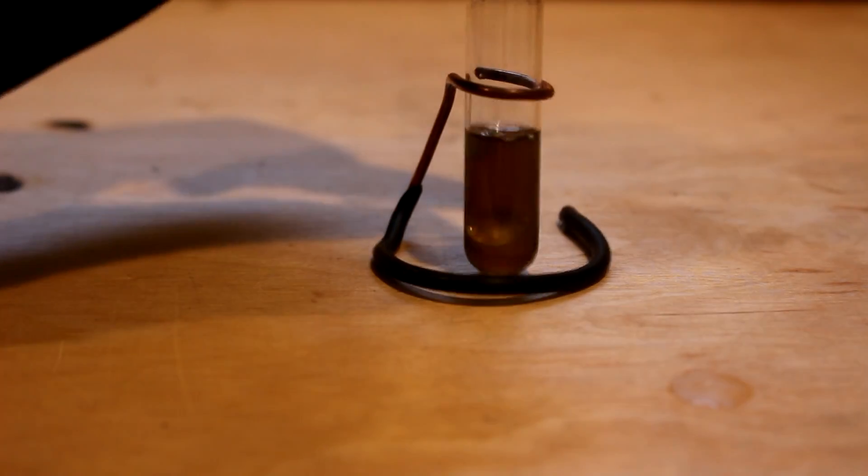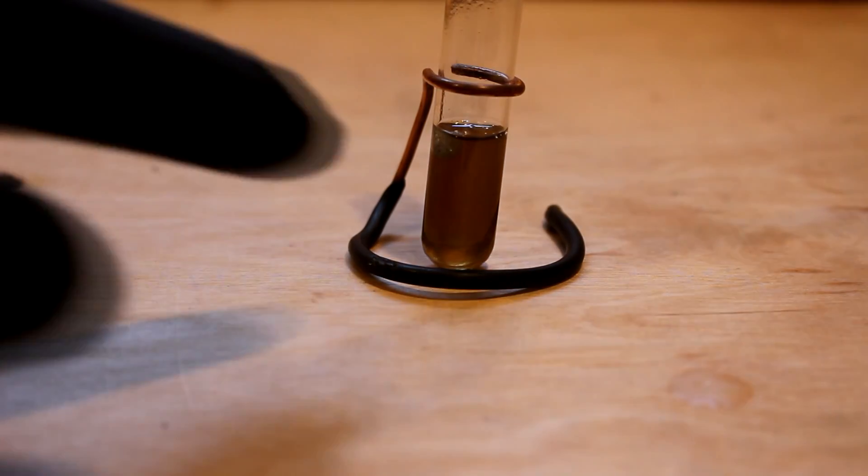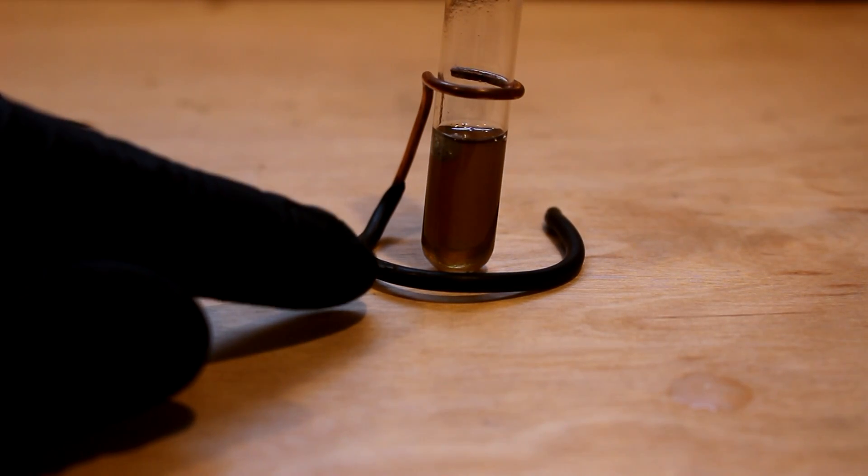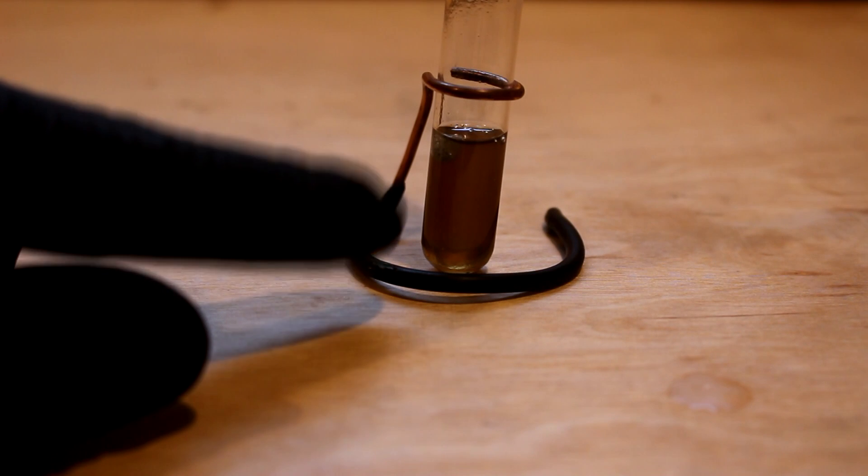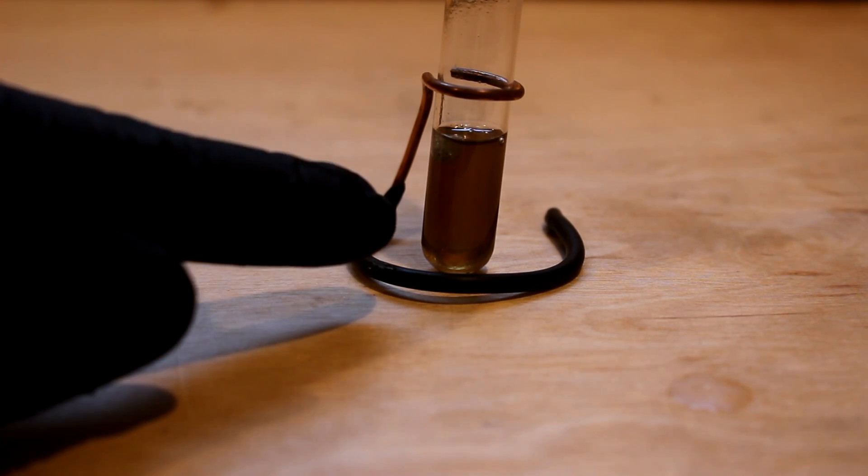Did it sink? It sank. There you go. Cubic zirconia has a density of around six grams per cubic centimeter. So it sank in the solution that is 4.25.